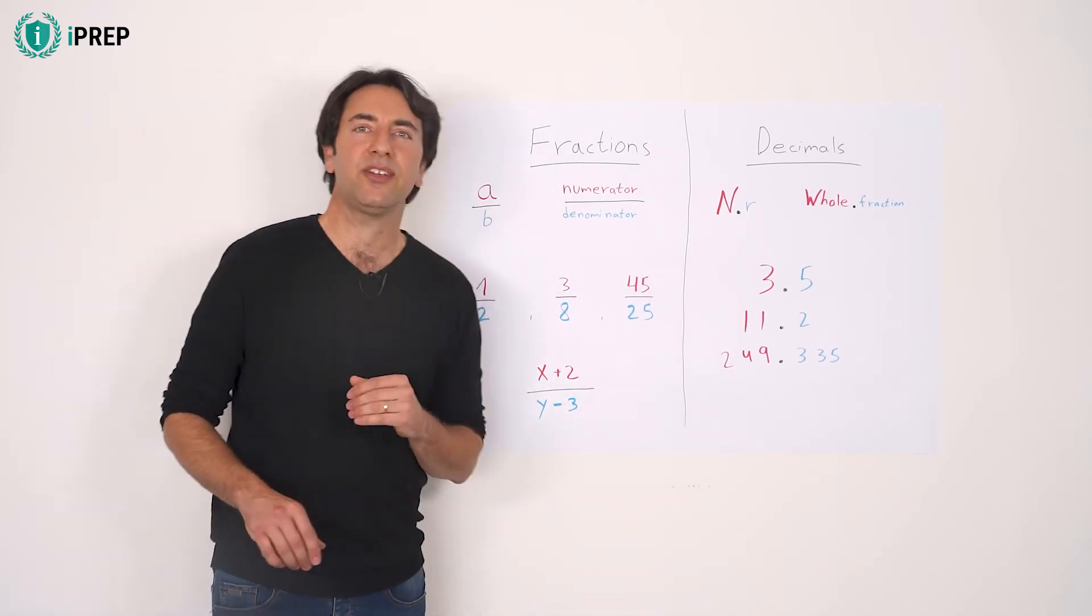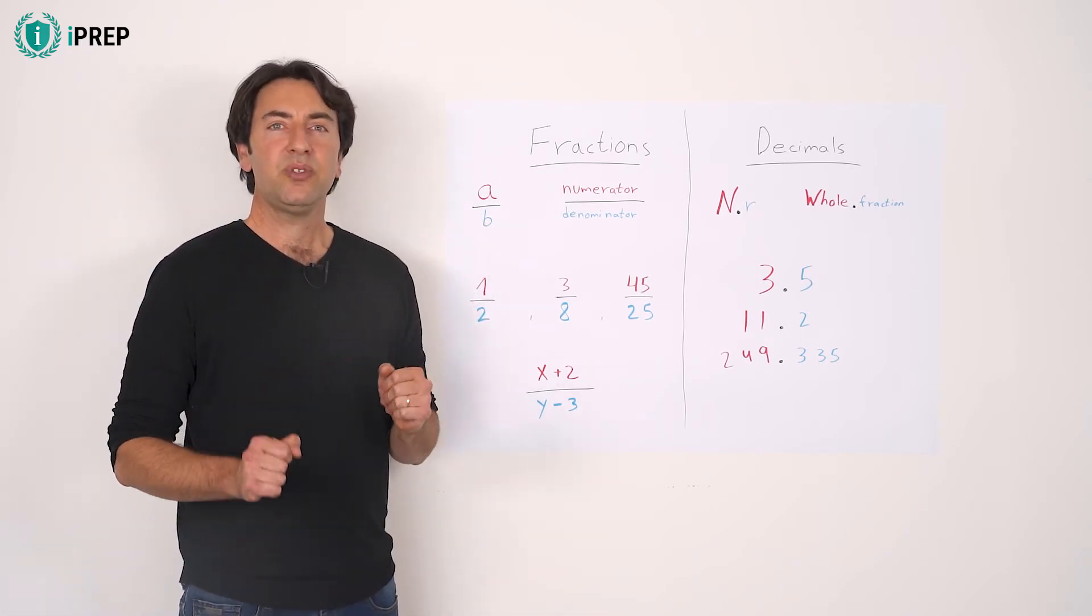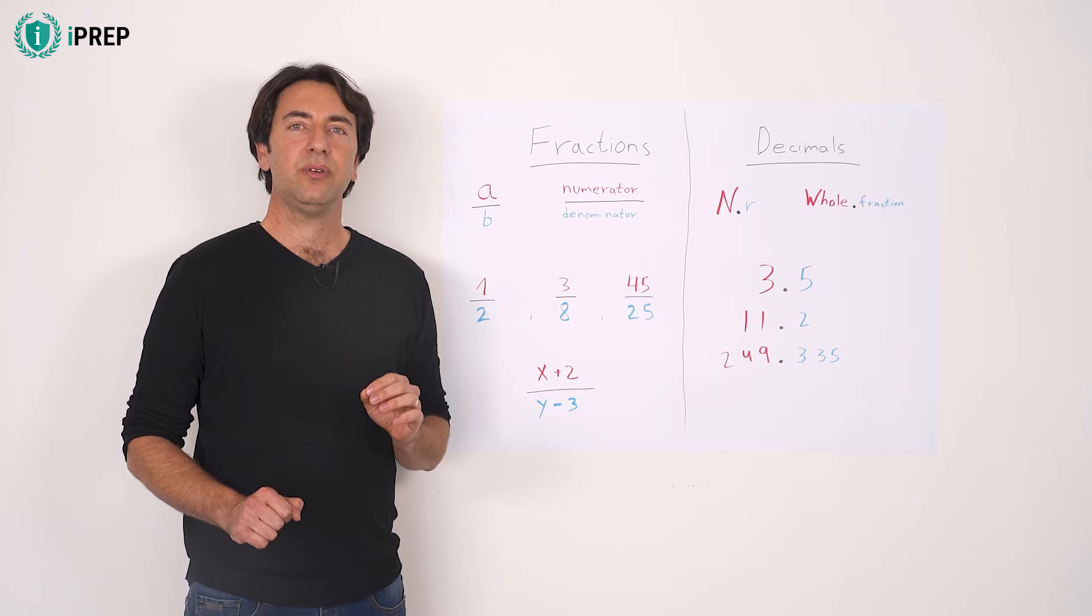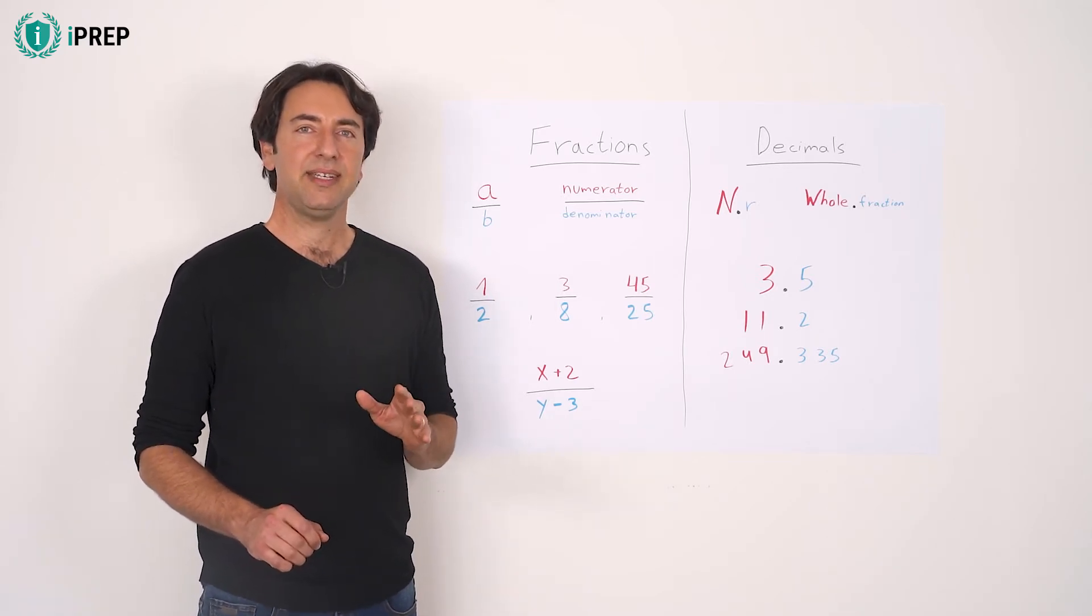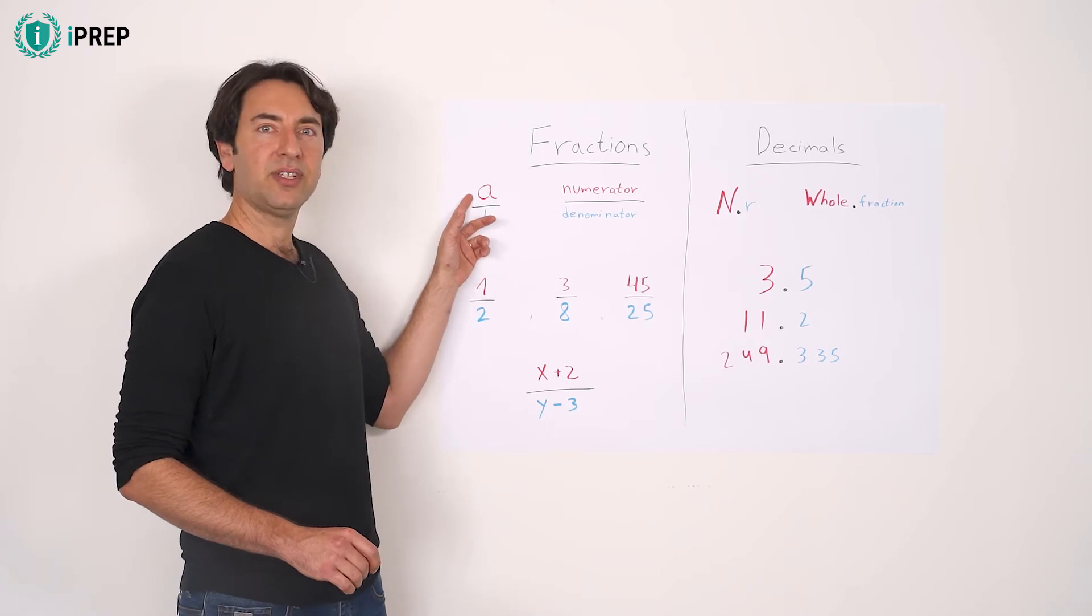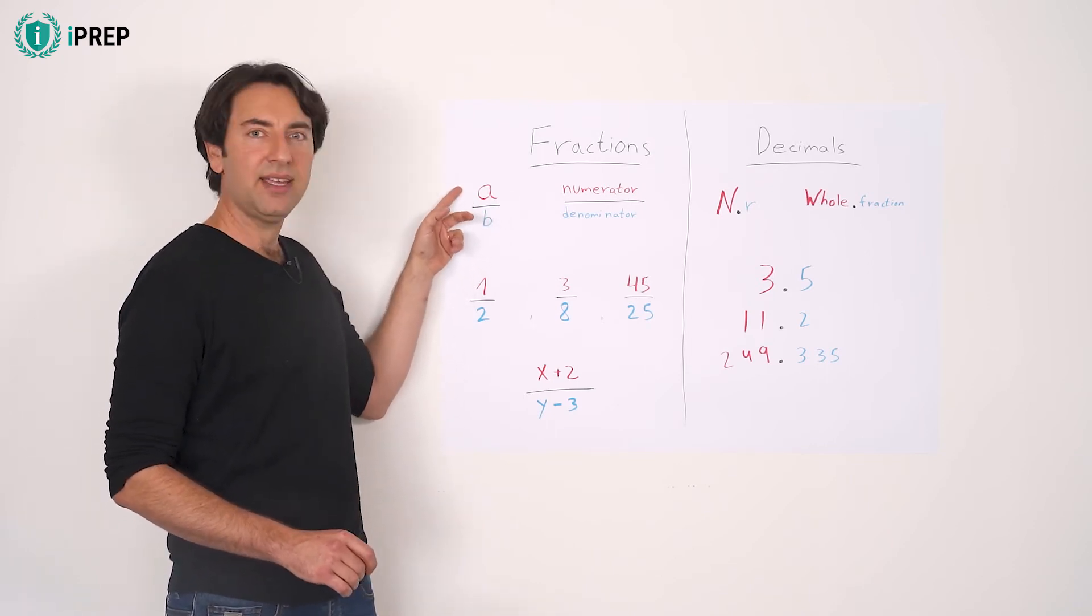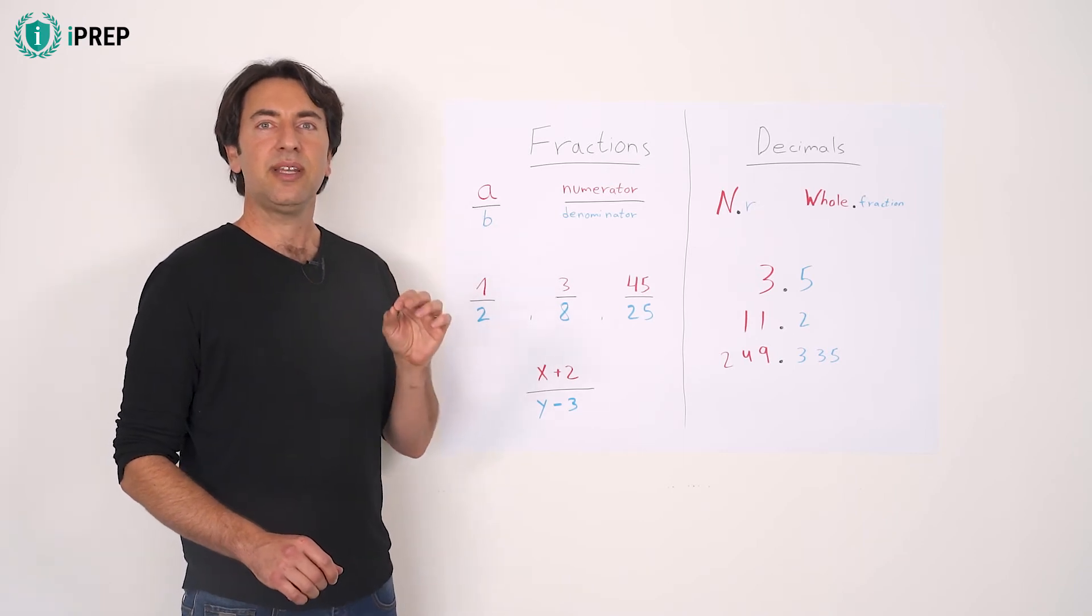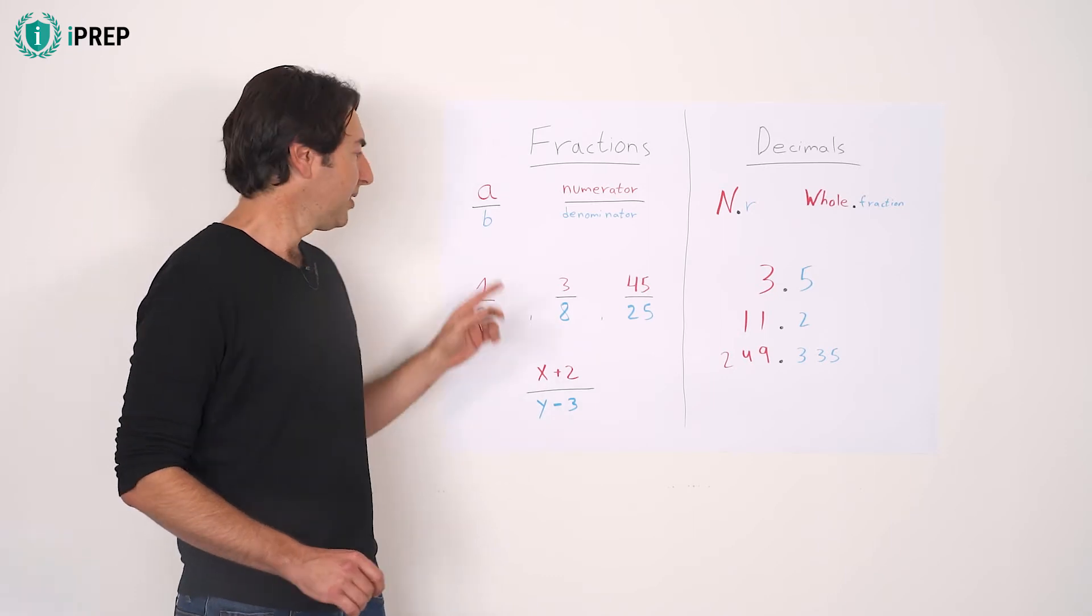Start with fractions. A fraction is the most basic way to display a number or quantity which is not whole. More precisely, a fraction represents the number of existing parts, which is A, of the total number of equal parts that comprise the whole. That's B.